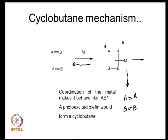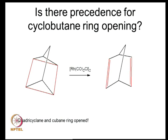How can one propose such a reaction mechanism? When an olefin is coordinated to a metal, electrons are depleted from the HOMO or the LUMO of the olefin, so in a sense they behave as if they are photo-excited molecules. If you recollect your organic chemistry, you will realize that photo excitation can lead to a 2+2 cycloaddition reaction. That is exactly what we are proposing — the formation of a cyclobutane in the coordination sphere of the metal and its cycloreversion.